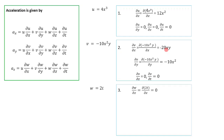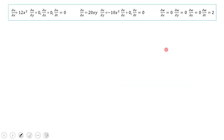For the w term, w = 2t. ∂w/∂x = 0, ∂w/∂y = 0, ∂w/∂z = 0. Since t is present, ∂w/∂t = 2.